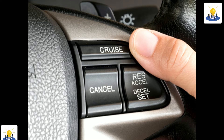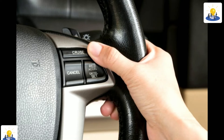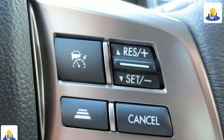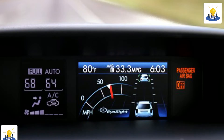Memory Seats. The memory seat feature allows the driver to program different seat positions that can be recalled at the push of a button. The memory seat feature is an addition to the basic power seat system. Most memory seat systems share the same basic operating principles, the difference being in programming methods and number of positions that can be programmed. Most systems provide for two seat positions to be stored in memory.